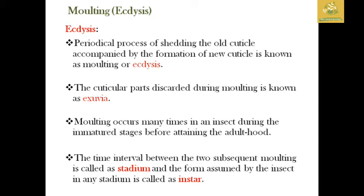What is ecdysis? We have to remove the old cuticle from the insect body — that process is called ecdysis. In a periodic process, new cells are formed in the insect body. We will talk about ecdysone and the cuticle part.